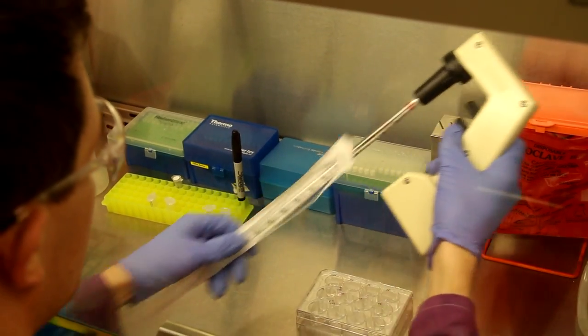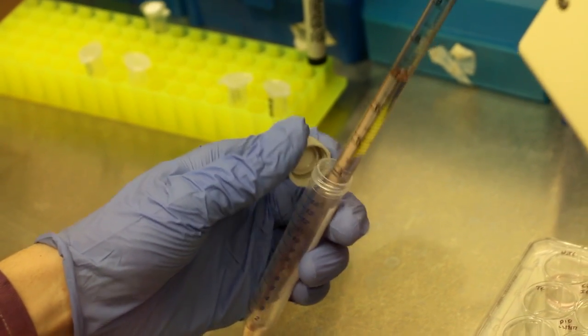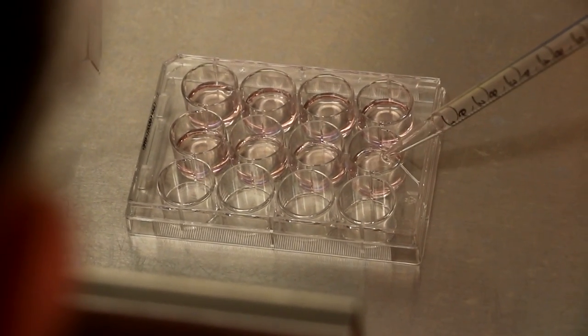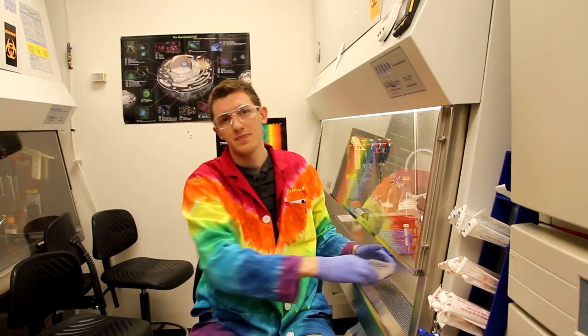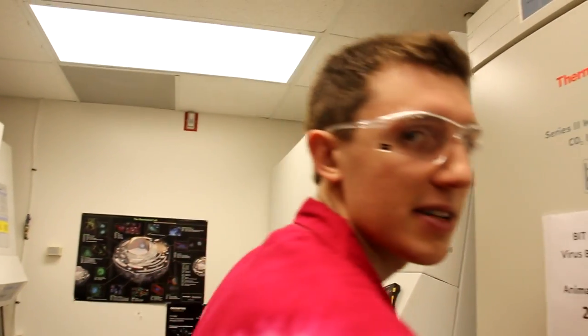You will now add 1 ml of your transfection reaction mixed with growth media to each well in your 12-well plate that you intend to transfect. When you're finished with transfection, return your cells to an incubator set to 37 degrees Celsius.